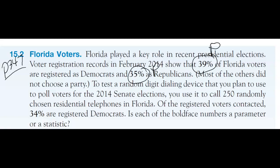Then, to test a random digit dialing device that you plan to use to poll voters for the 2014 election, you call 250 randomly chosen residential telephones of registered voters contacted, and 34 percent are registered Democrats. That would be a statistic.